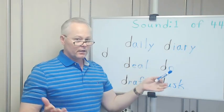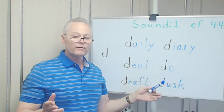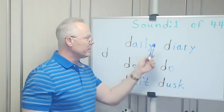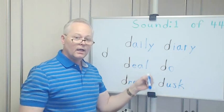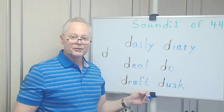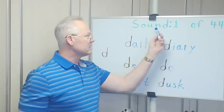American English is only comprised, it's only made up of 44 different sounds. We're going to go through each one of them in the next 44 videos of the pronunciation playlist. This is sound number one of 44.